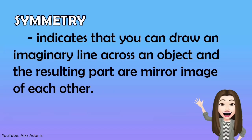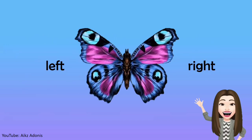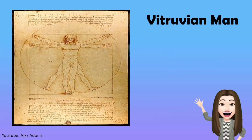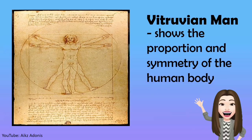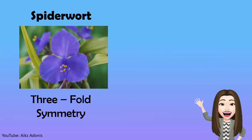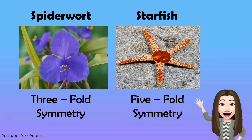Symmetry indicates that you can draw an imaginary line across an object and the resulting parts are mirror images of each other. For example, this butterfly demonstrates symmetry because the left part of it is a mirror image of the right part. Another example is Leonardo da Vinci's Vitruvian Man, which shows the proportion and symmetry of the human body. Aside from two-fold symmetry, we also have three-fold symmetry — for example, spiderwort — and five-fold symmetry — for example, starfish.